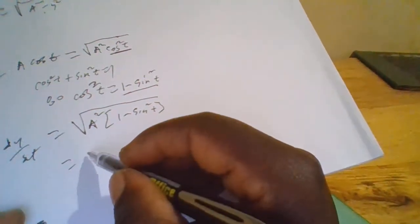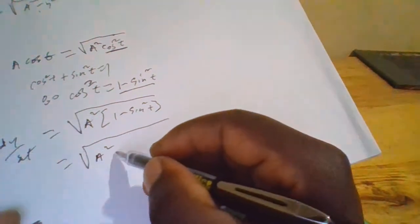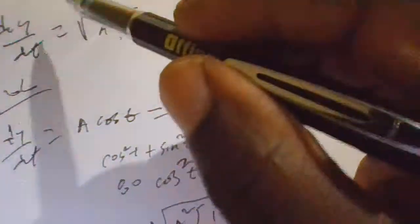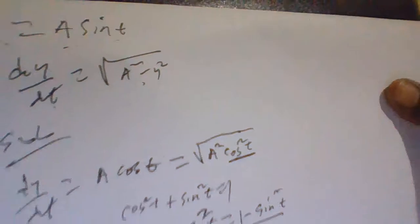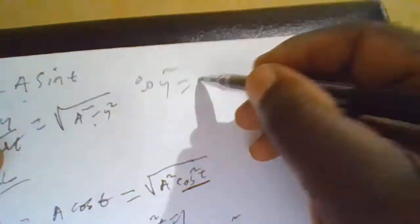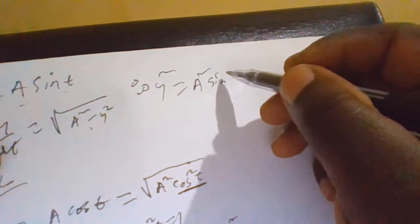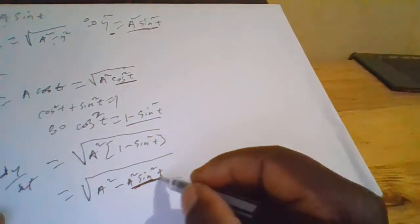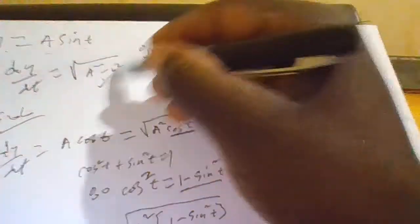Opening the bracket gives the square root of A squared minus A squared sin squared t. But remember y equals A sin t, so when you square this, y squared equals A squared sin squared t. Therefore this equals the square root of A squared minus y squared. We have shown part (i).